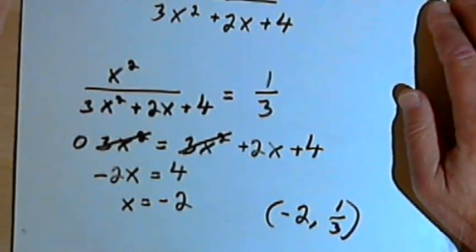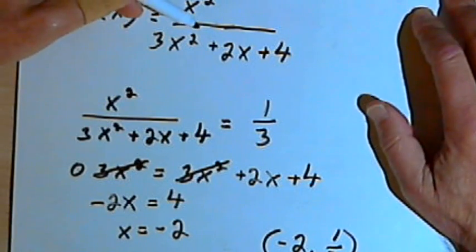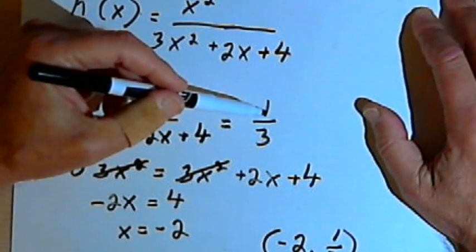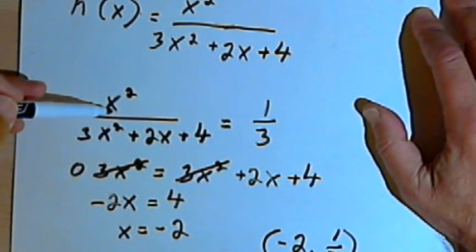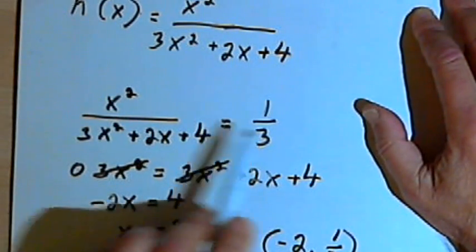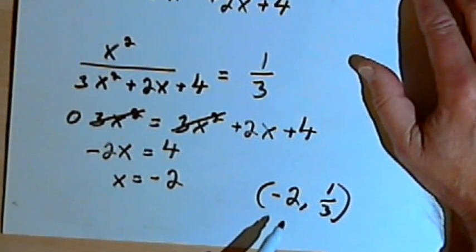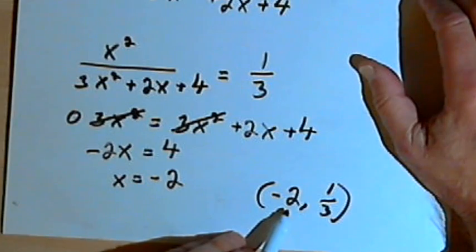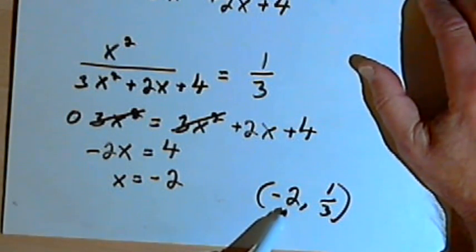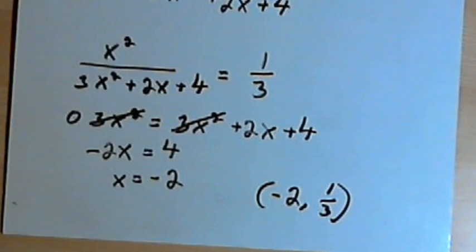The procedure for all of these is basically the same. You first find out what the horizontal asymptote is. Then you take your rational expression and set it equal to that horizontal asymptote. Then you see if you can solve that equation to find a value of x that will balance the equation. If you can do that, that value of x is the x-value where your graph crosses or intersects the horizontal asymptote. And that's about it. Take care, I'll see you next time.